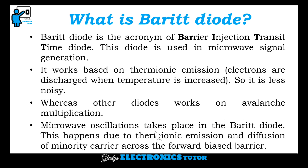Microwave oscillations take place in the BARITT Diode. This happens due to thermionic emission and diffusion of minority carriers across the forward bias barrier.